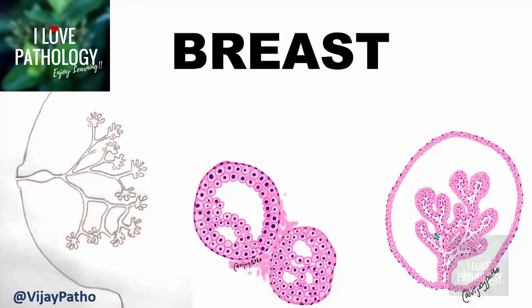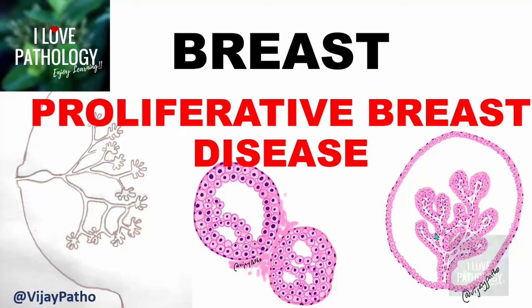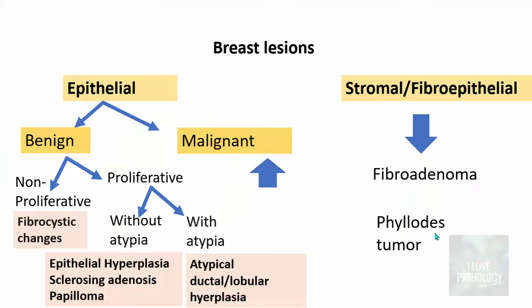Hello everyone. Welcome to this short tutorial from Pathology Made Simple at ilawpathology.com. This is part 2 of the breast pathology series for undergraduate medical students. In the last part we discussed the normal anatomy and histology of breast, the classification of various breast lesions, and non-proliferative breast disease, that is fibrocystic changes. In today's tutorial let's talk about proliferative breast disease.